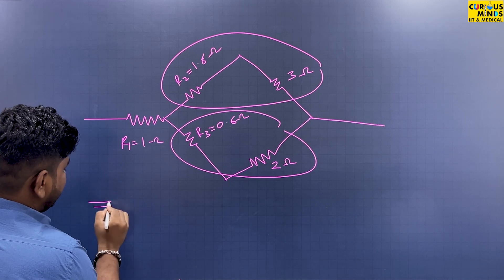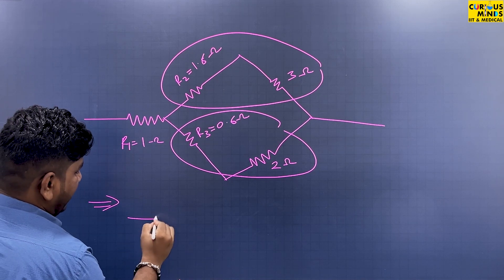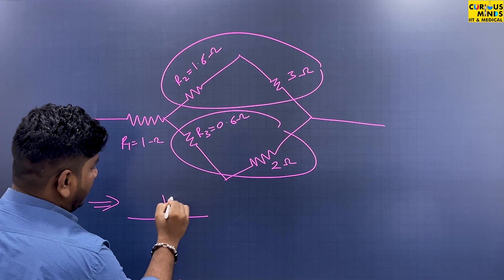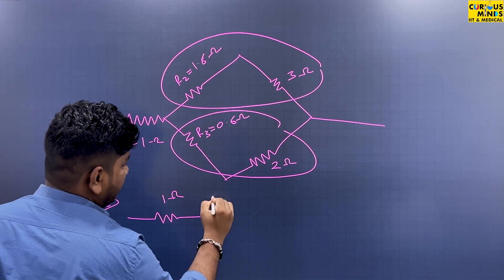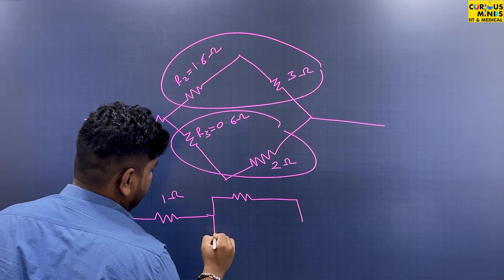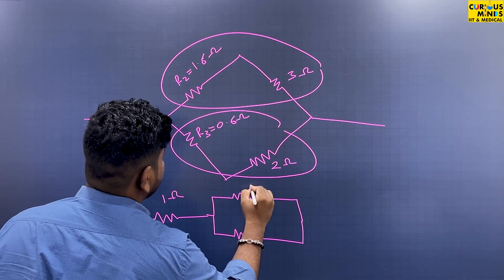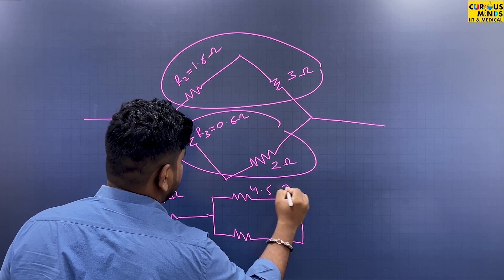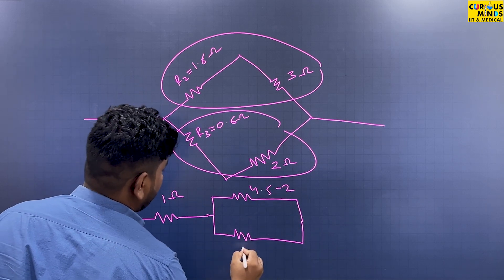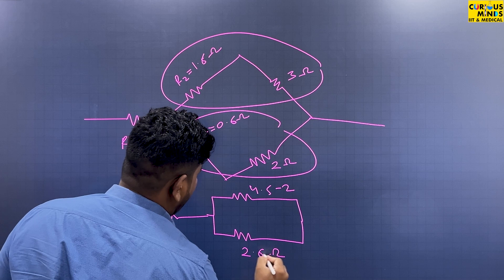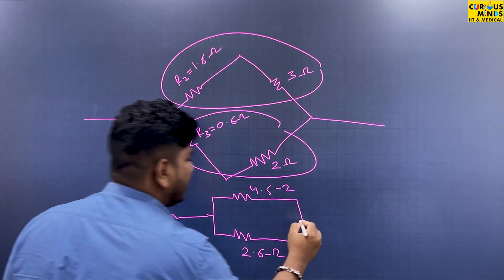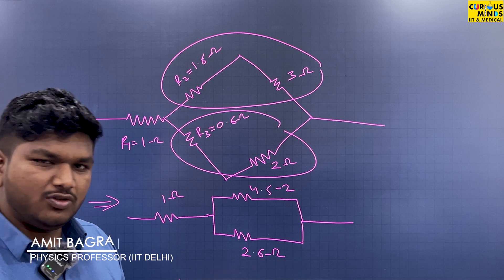So you can then simplify the circuit as this will be 4.5 ohms and this will be 2.6 ohms. So as you can see, this becomes a very simple circuit that you can easily solve.